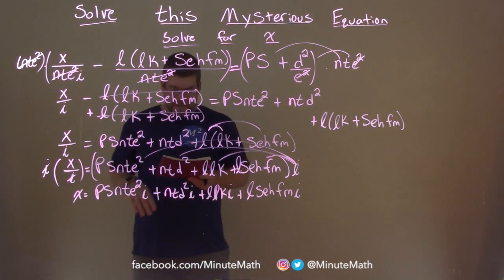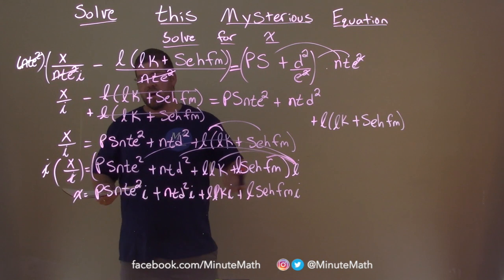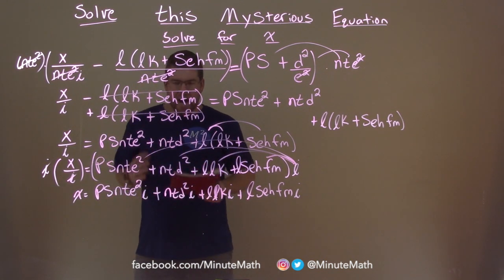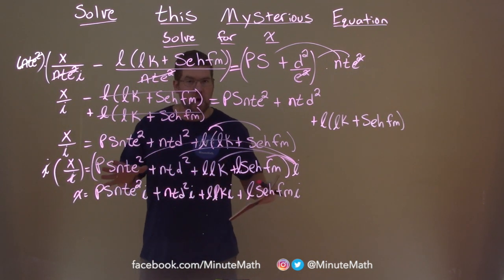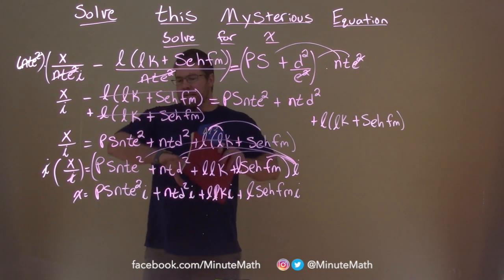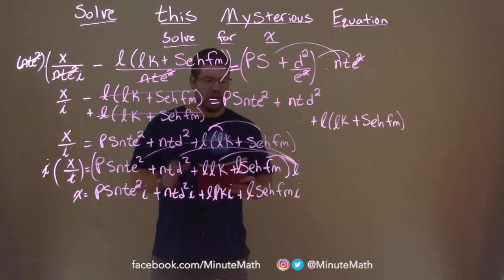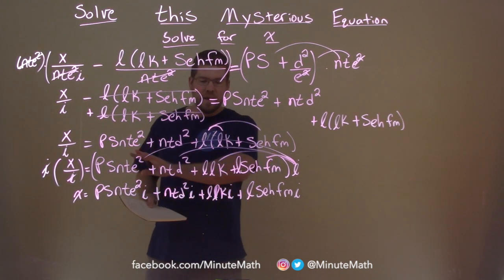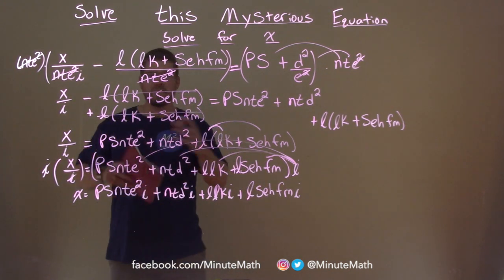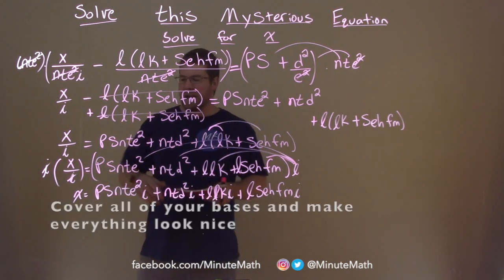So we're almost there. We're pretty much, I mean, done. x is by itself. But I personally like to break down all the details. And really, I don't like having things squared when I write my final answer. So I'm just going to eliminate all the squares, rearrange things that look nicer. And then we're done.